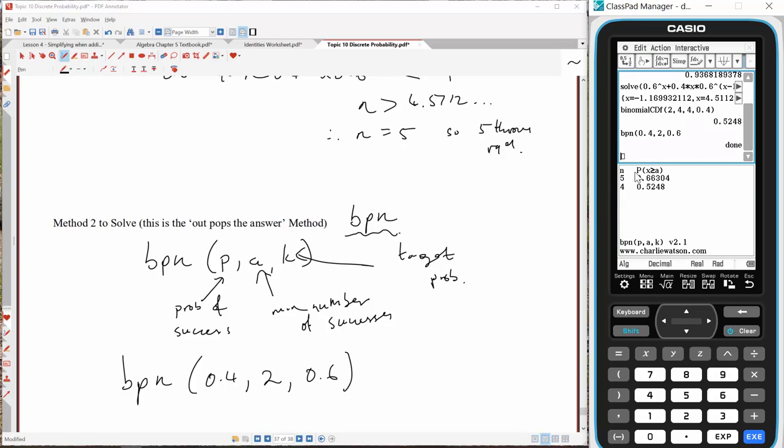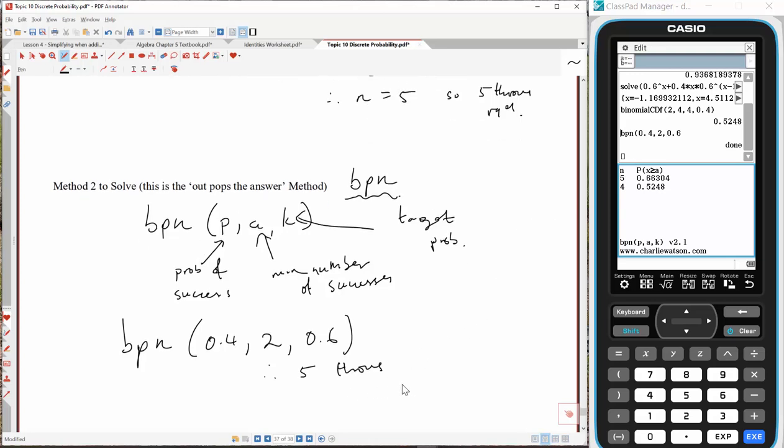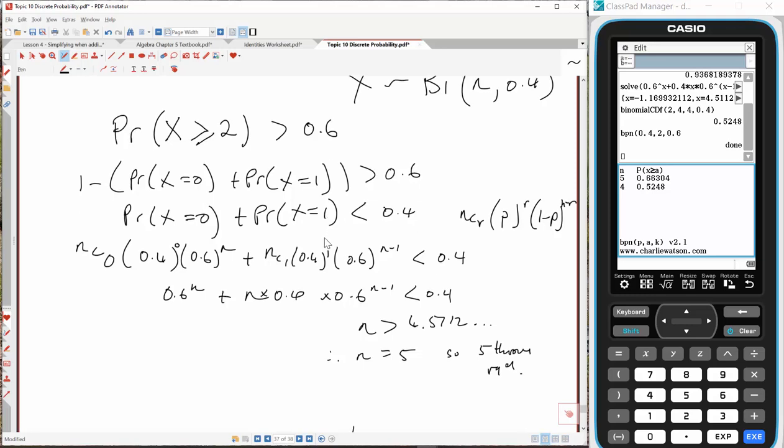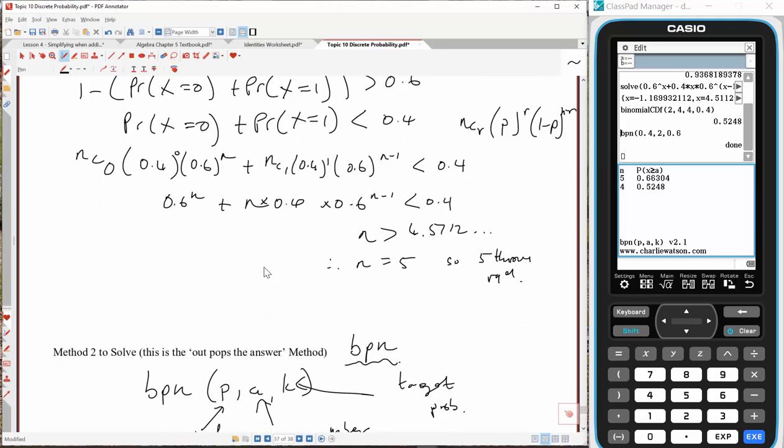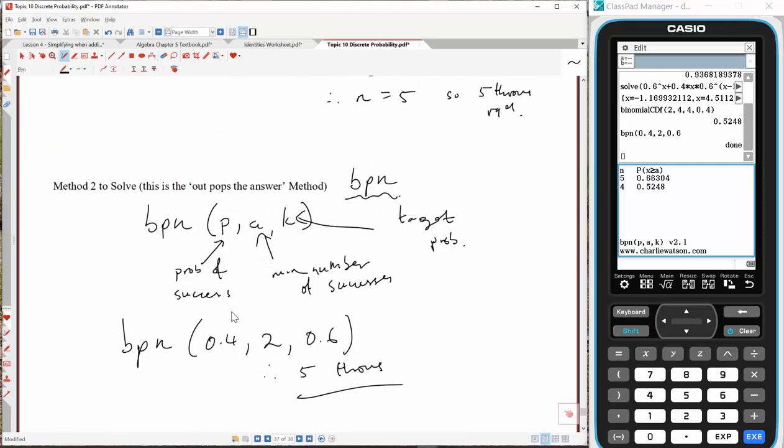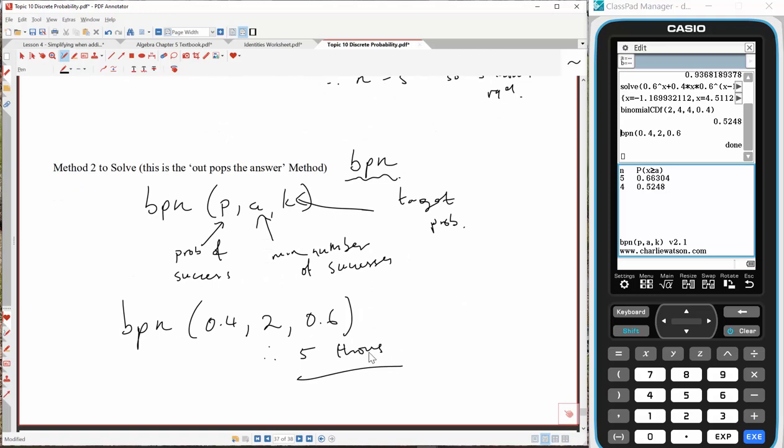And what we can see here is it gives us the value 4, it says 52%, and 5, 66%. Therefore, 5 throws gives us the target probability. So that there will be enough for a one-mark question. I've seen this in recent years as a one-mark question. If it was a two-mark question, what I'd be doing is I'd be showing all of this stuff here. But if it's a one-mark question, slam it into BPN, and it'll just throw out the five throws result.